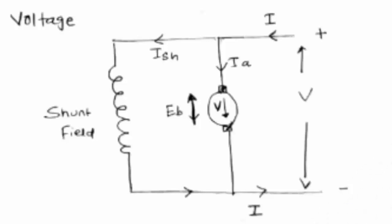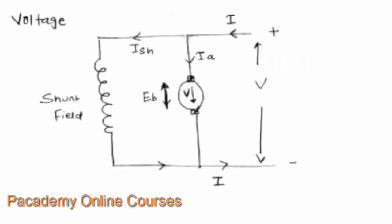We will now derive the voltage equation of an electric motor. This is a basic circuit of an electric motor. There is a supply voltage, and the shunt field shown here is a field winding — this is a shunt wound motor. The field winding is shown as a shunt field, and it will draw I_sh current. I_A current will be drawn by the armature, and E_B back EMF will be produced.